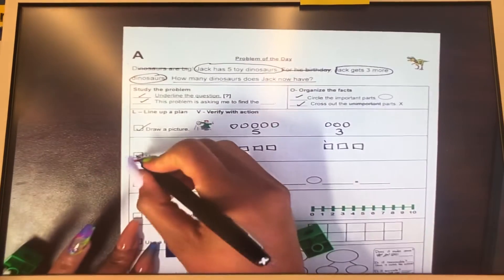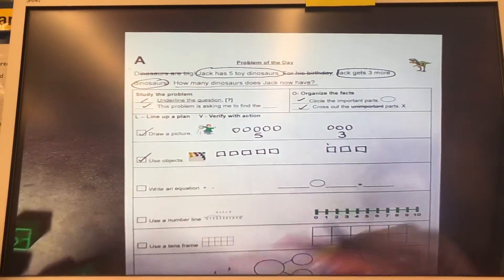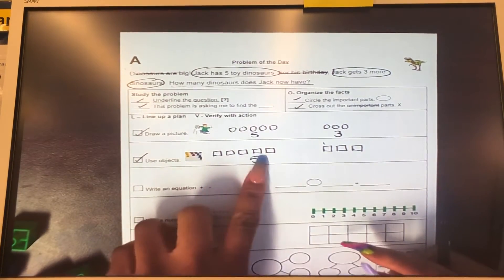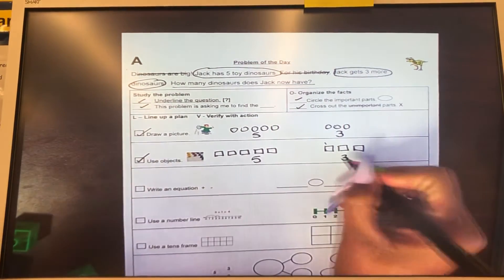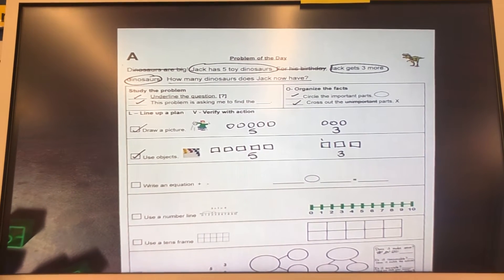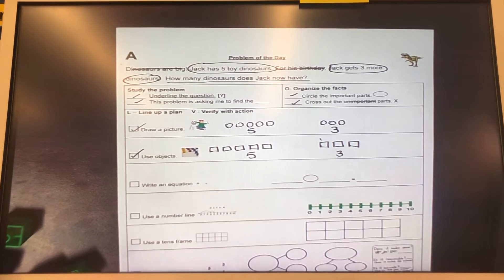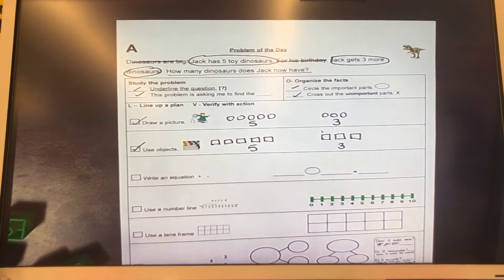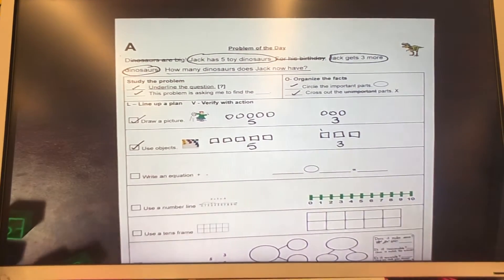Let's check. And remember, we can put our numbers below our objects. Five and three. Equation. So again, this is a put together problem, which means we have two things we need to add, right?